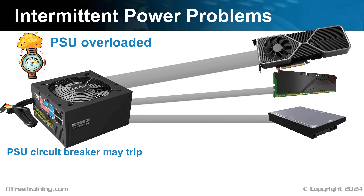Modern power supplies generally use resettable circuit breakers rather than manual ones. These circuit breakers may take some time to reset — usually less than a minute. During this period, the power supply won't provide any power and will appear dead. No matter how many times you press the power button, it won't start up. Once the circuit breaker resets, the power supply will start and run like nothing happened. So if your computer suddenly switches itself off without warning and won't restart for a little while, the circuit breaker has likely tripped.